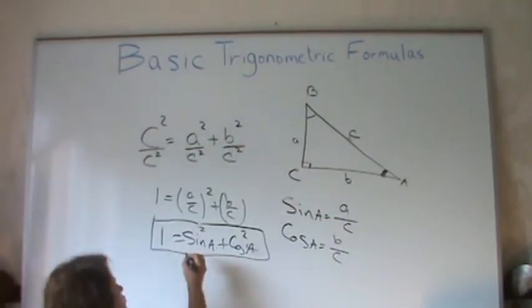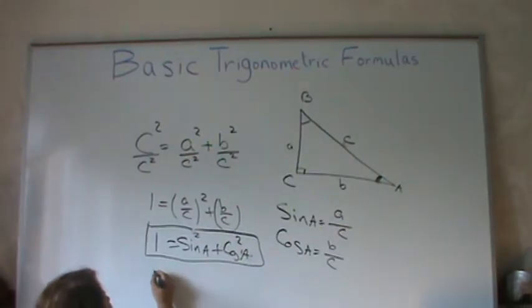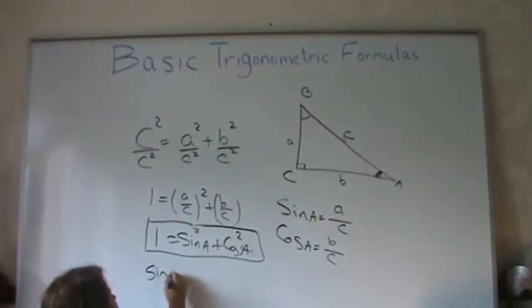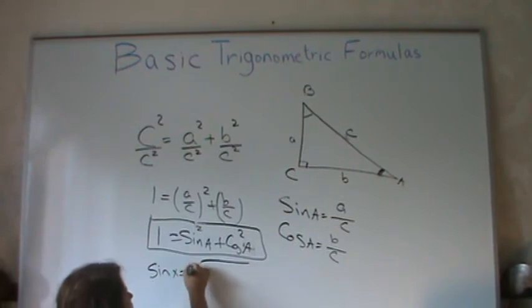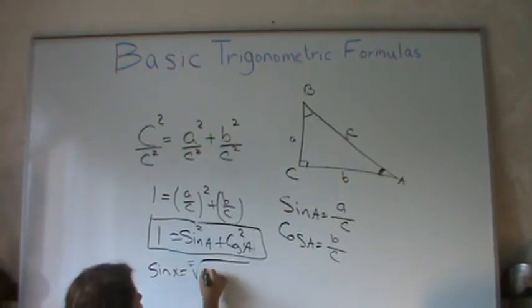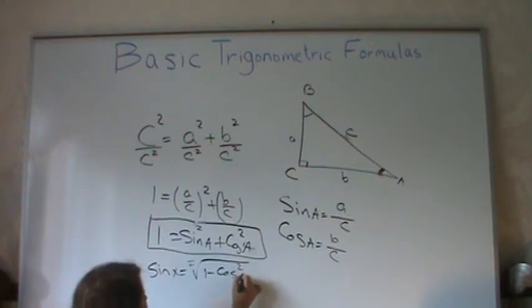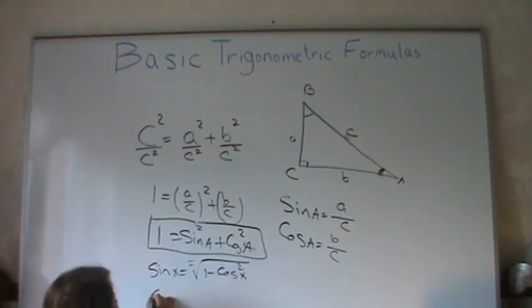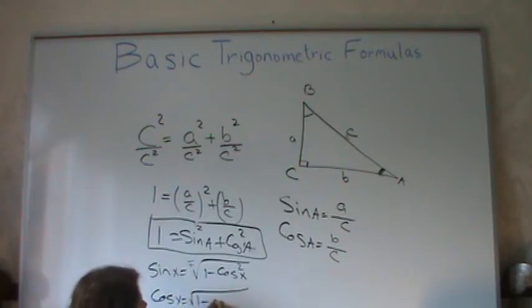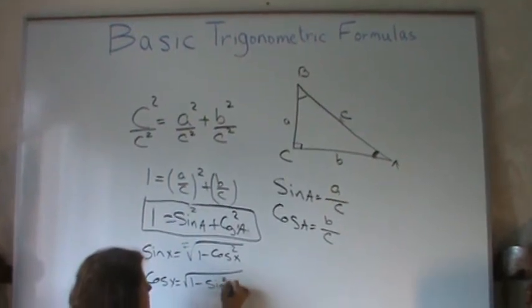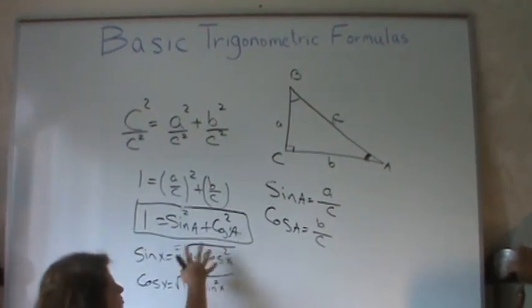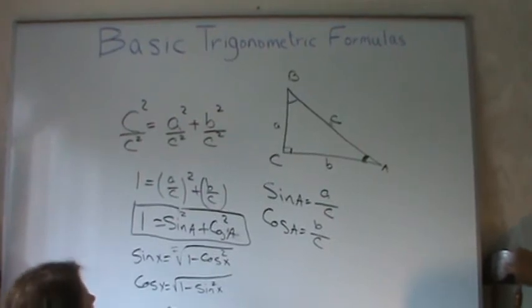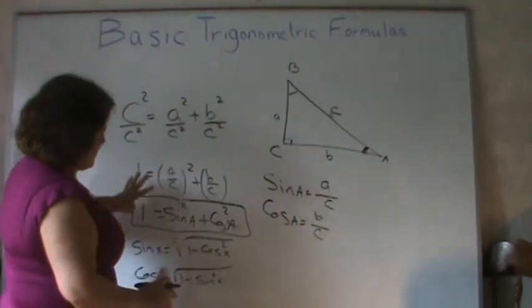From here you can derive other formulas: sine of x equals plus or minus the square root of 1 minus cosine squared x, or cosine of x equals plus or minus the square root of 1 minus sine squared x — whatever variable name you want to use. This is one of the basic identities.